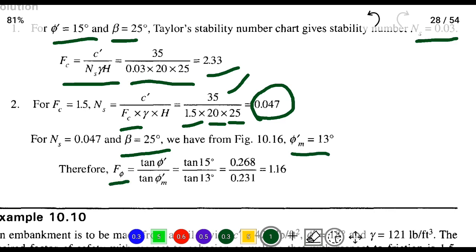Now we substitute Fφ = tan φ'/tan φm, so the angle of internal friction divided by the mobilized angle of internal friction. Tan 15° divided by tan 13°: tan 15° is 0.268 divided by tan 13° is 0.231, which gives us 0.268/0.231 = 1.16.